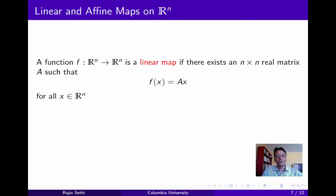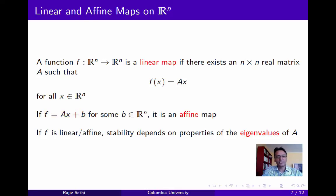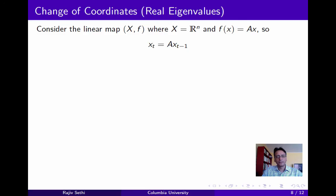We say that a function f, which is a self-map on R^n, is a linear map if there exists an n by n real matrix A such that f(x) is just Ax for all points x in R^n. We say that it's an affine map if f is equal to Ax plus b for some vector b in R^n. We'll see that if f is linear or affine, the stability properties of the fixed points of f will depend on the properties of the eigenvalues of A.